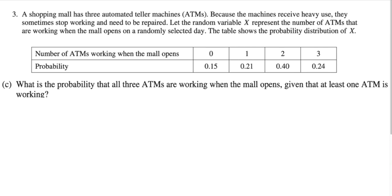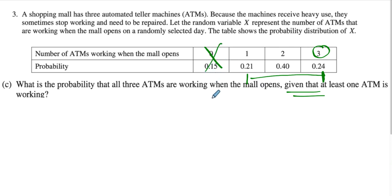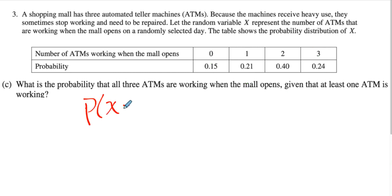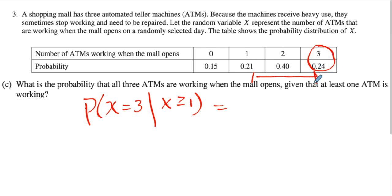Part C: what is the probability that all of the ATMs are working when the mall opens, given that at least one of the ATMs is working? This is conditional probability. What it's saying is: what is the probability that we have X = 3, if we know we're only dealing with 1 through 3? We're really getting rid of the 0. Whatever follows 'given that' is the denominator of your fraction. So we're asking for P(X = 3 | X ≥ 1), which equals P(X = 3) divided by P(X ≥ 1).